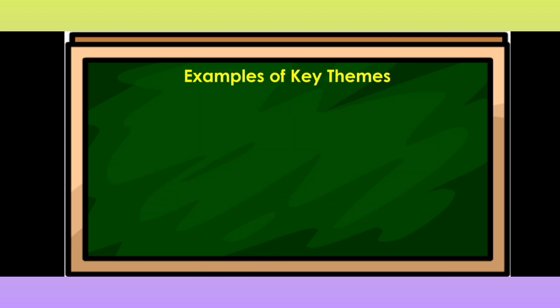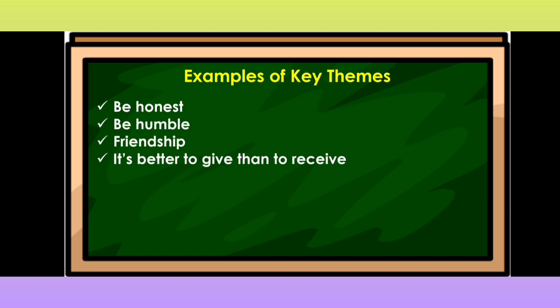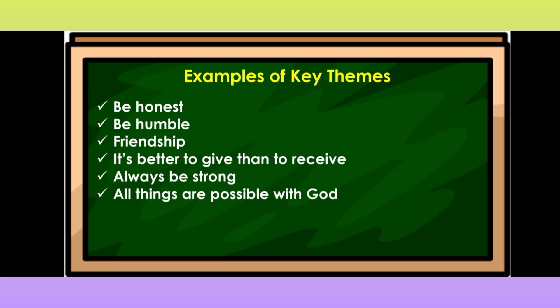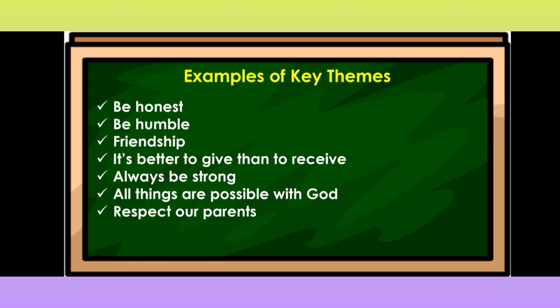Here are some examples of key themes: Be honest. Be humble. Friendship. It's better to give than to receive. Always be strong. All things are possible with God. And respect our parents. Here are just some of the key themes that can be found in a story. Now that you have learned how to identify the major points and key themes in a story, let us try to answer these activities.